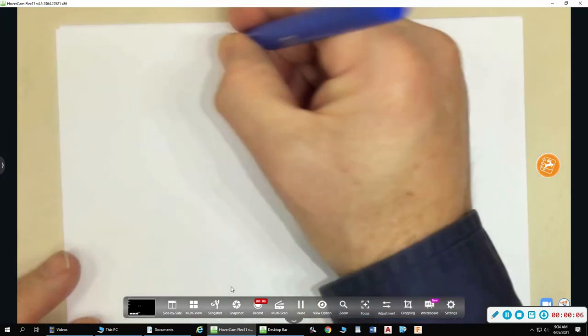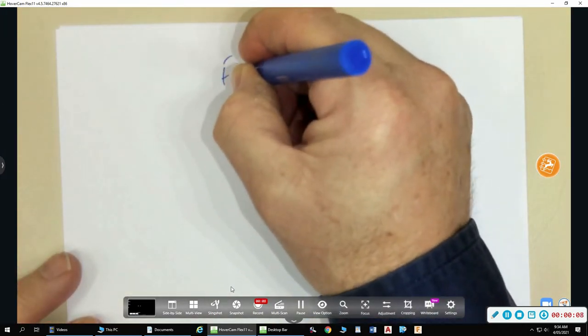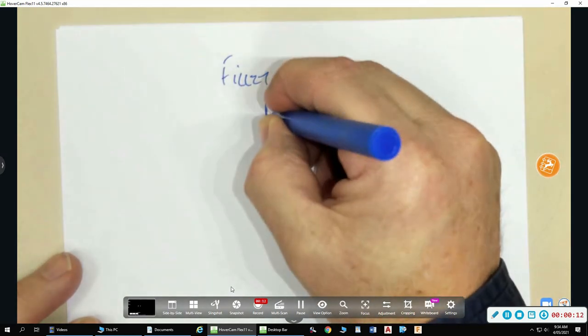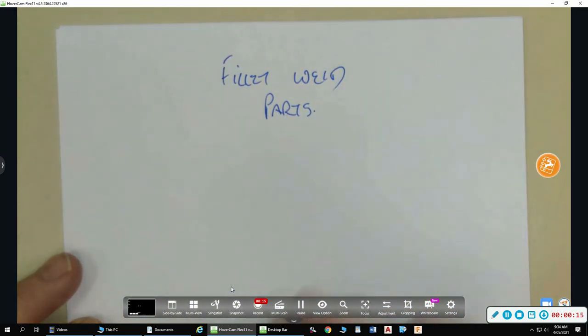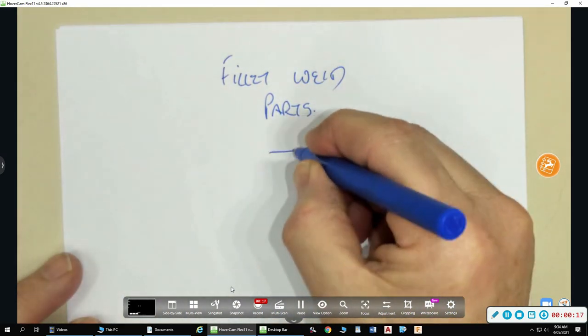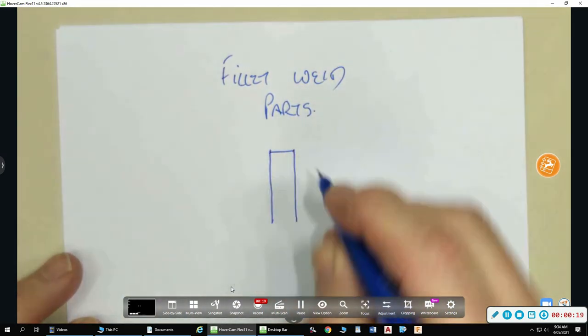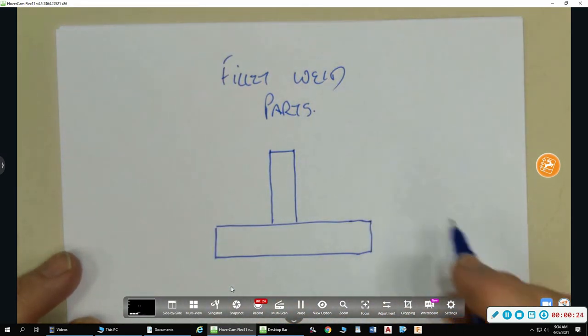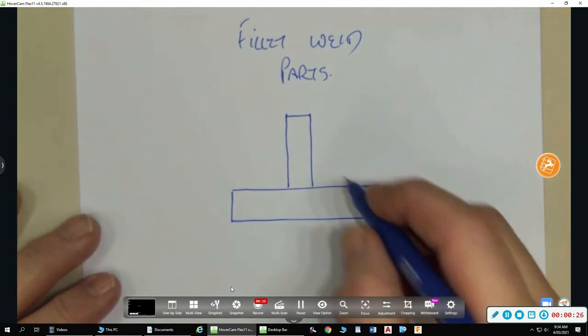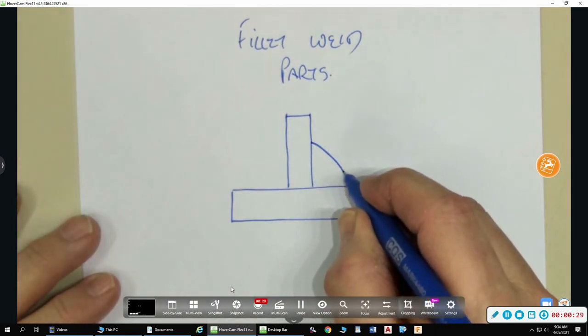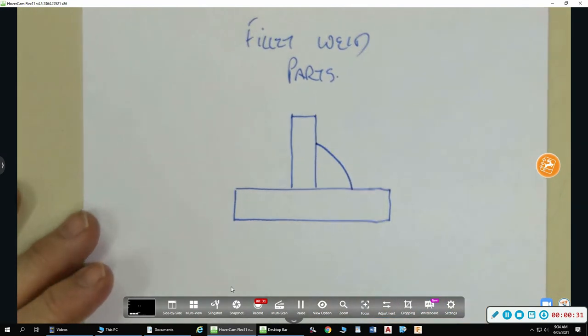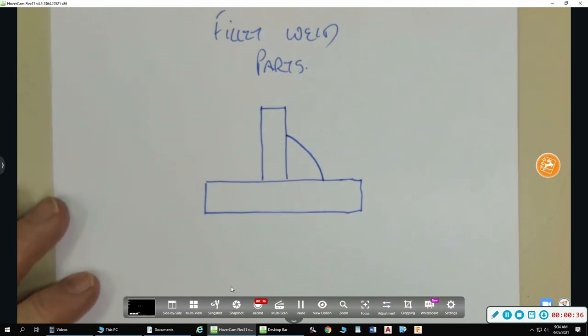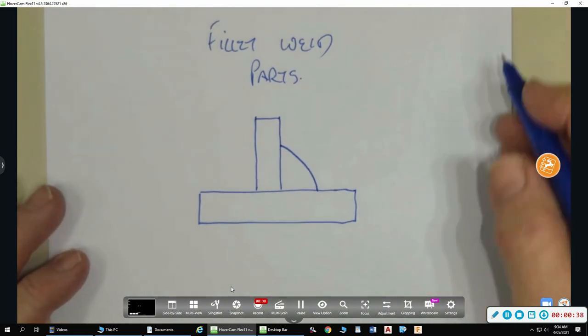Alright, now we're looking at fillet welds. Okay, what type of joint we got here? T joint.